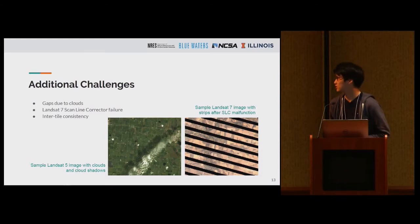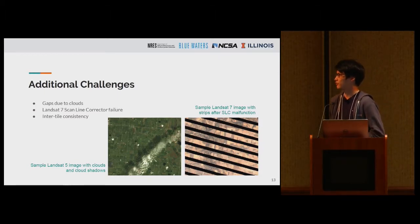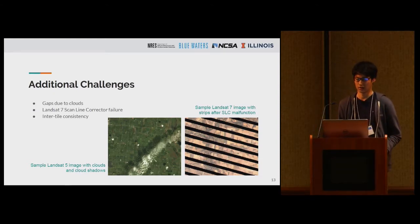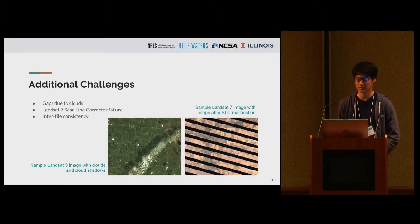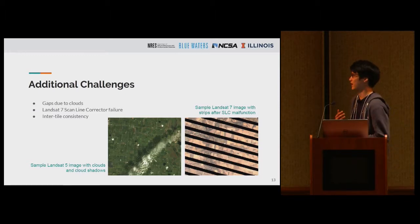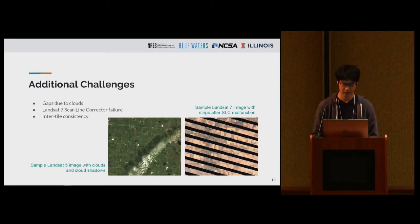StarFusion faces additional challenges. For example, there are clouds and cloud shadows which cause gaps, and there is a malfunction with the Landsat 7 platform's scanline corrector, so instead of a clean image we have something with black lines. Those missing data can cause inconsistency when we try to produce a daily-frequency, cloud-free image, and this is one of the main challenges of this work.